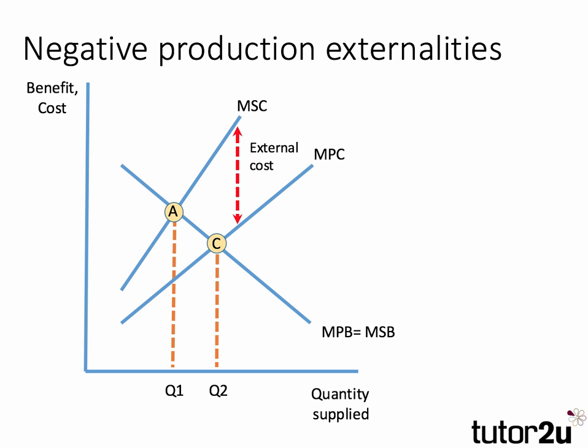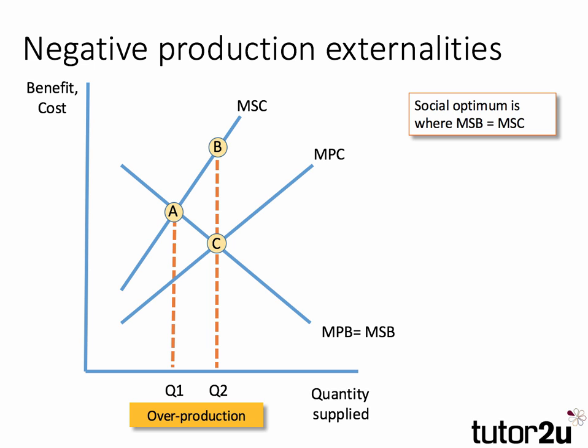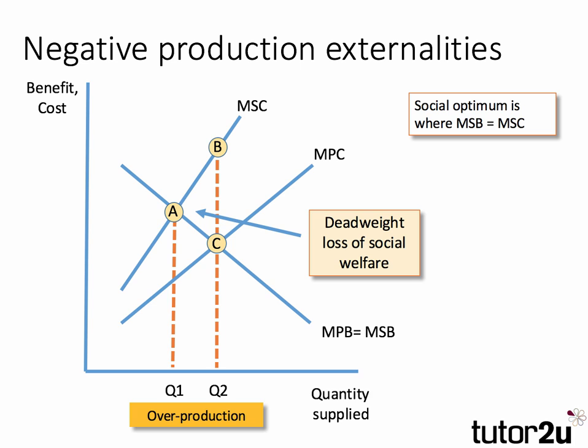However, if we take into account the social cost, the social optimum is where social cost meets social benefit, at output A. So in this situation there is over-production — the social optimum level of output is lower than the private optimum. There's a triangle A, B, C: if we over-produce from Q1 to Q2, we lose welfare — this is called a deadweight loss of social welfare, a loss of efficiency due to over-production.